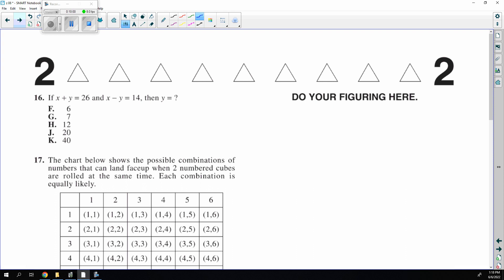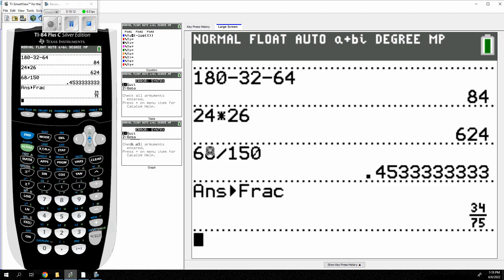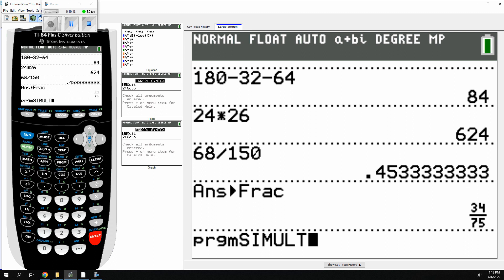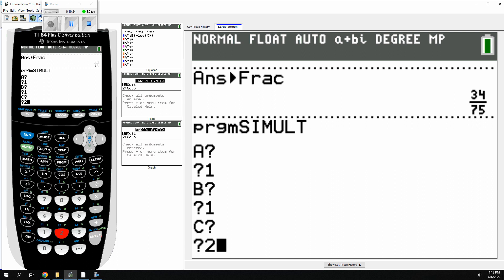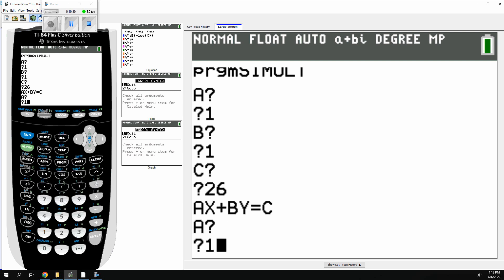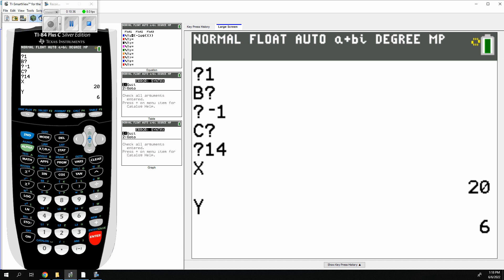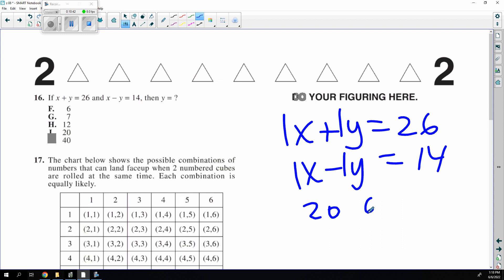This is a simult all the way. You hit 1, 1, 1, negative 1 for those numbers. So it would be 1, 1, 26. And the other would be 1, minus 1, 14. And that would give me the two numbers are 20 and 6. So y would have to be 6.